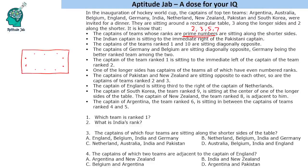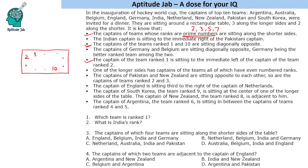We will first concentrate on the conditions that talk about rankings. The captains of teams ranked 1 and 10 are diagonally opposite. The captain of team rank 1 is sitting to the immediate left of the captain of team rank 2. If I place rank 2 here, then rank 1 is next to it, and diagonally opposite will be rank 10. One of the longer sides has captains of teams all of which have even numbered ranks, so all 3 numbers on that side will be even numbers.